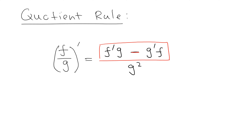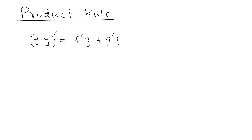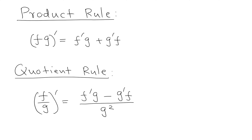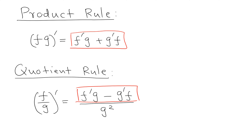Then we also divide by g squared. In this form it is much easier to remember: it's the exact same expression — plus sign goes with the product rule, minus sign goes with the quotient rule. You always take the derivative of the first term and multiply by the second. So this is the product rule and this is the quotient rule, and you can see it's the same terms, one with plus and one with minus.